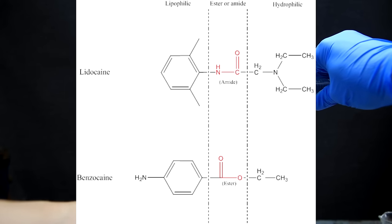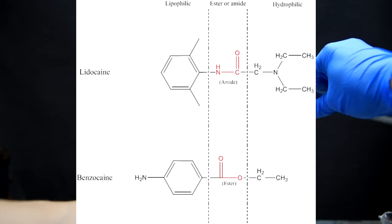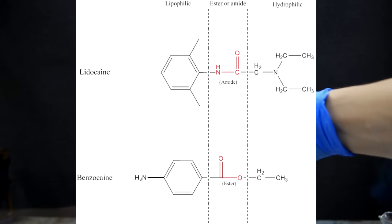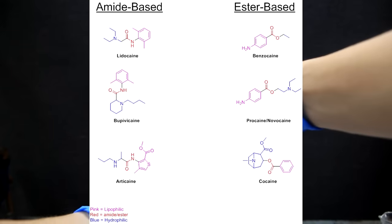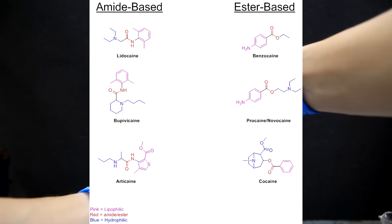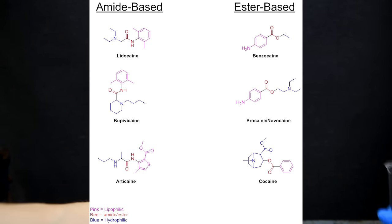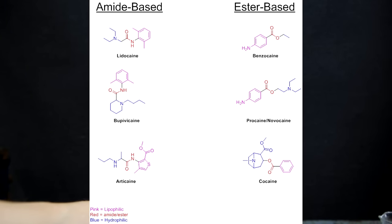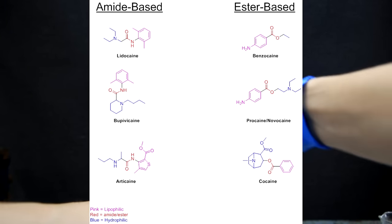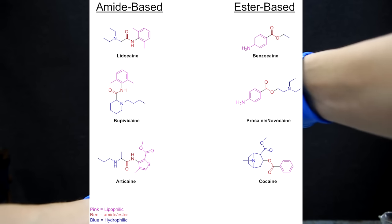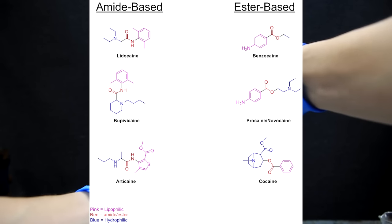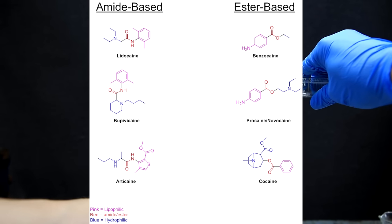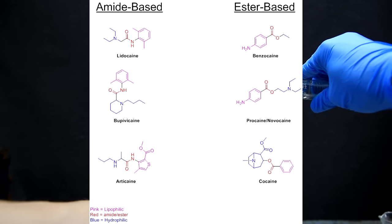Now knowing the overall structure of local anesthetics, let's take a look at the common ones and see if we can notice each piece. The structures seem pretty variable, but I've gone ahead and color-coded each section. From this chart, you can see that it's not really viable to convert one local anesthetic to another. I also want to make it extremely clear that you can't convert benzocaine to cocaine or any other illicit drug.